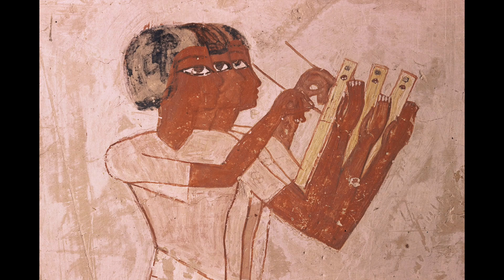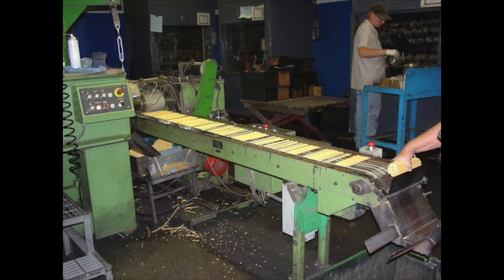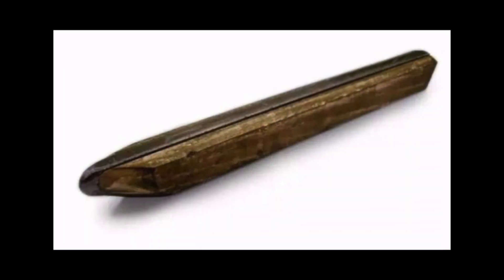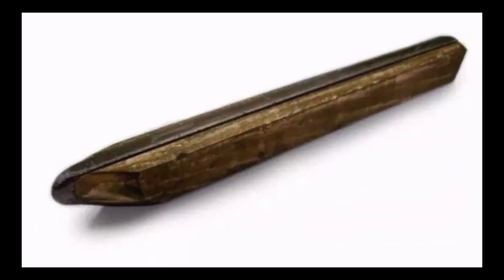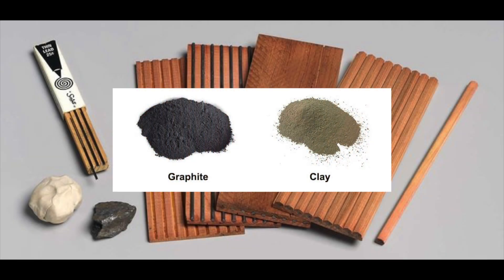Our story begins in ancient times, where early scribes struggled to leave their mark on parchment. It wasn't until the 16th century in England that the first inklings of the pencil emerged. These early writing instruments were a far cry from the sleek wooden pencils we know today, consisting of a mixture of graphite and clay encased in various makeshift wrappings.